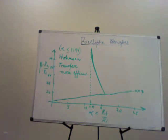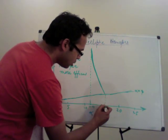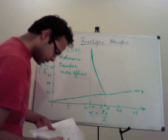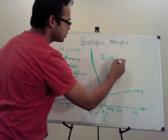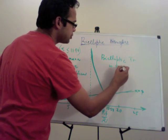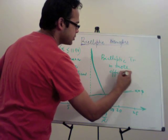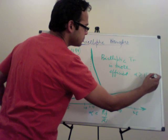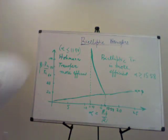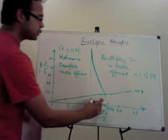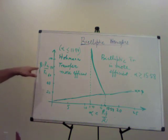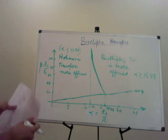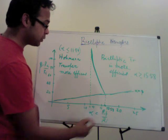To the right of alpha ≈ 15.58, the bi-elliptic transfer is always more efficient regardless of beta. Between alpha = 11.94 and alpha = 15.58, there is an intermediate region where the outcome depends on how large beta is chosen.